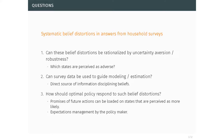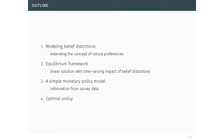I will extend the standard robust framework that Tom Sargent and Lars worked on for a decade and a half, in order to allow more flexibility while still preserving discipline on the type of belief processes I permit. In particular, I want a tractable framework that can be computed and estimated, where there is meaningful variation in these biases. Once introduced, I'll put it into an equilibrium model and argue that a reasonable approximation generates linear dynamics where belief distortions have a meaningful role.